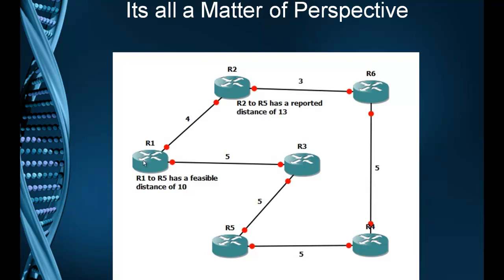That becomes R1's feasible distance. He says his best path is straight to R3 to R5, and it has a feasible distance of 10. Now R2, from his perspective, if he goes to R6 to R4 to R5, then he's got 3 plus 5, which is 8 plus 5, so he has a feasible distance of 13. But if he goes from R2 to R1 to R3, he has a feasible distance of 14. So in his case, his feasible distance is 13.